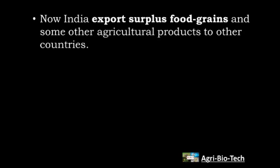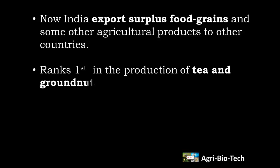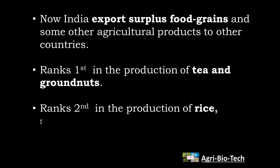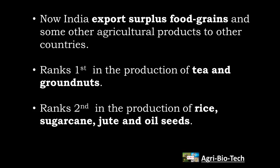As a result of green revolution, now India ranks first in the world in the production of tea and groundnuts. It ranks second in the world in the production of rice, sugarcane, oilseeds and jute.